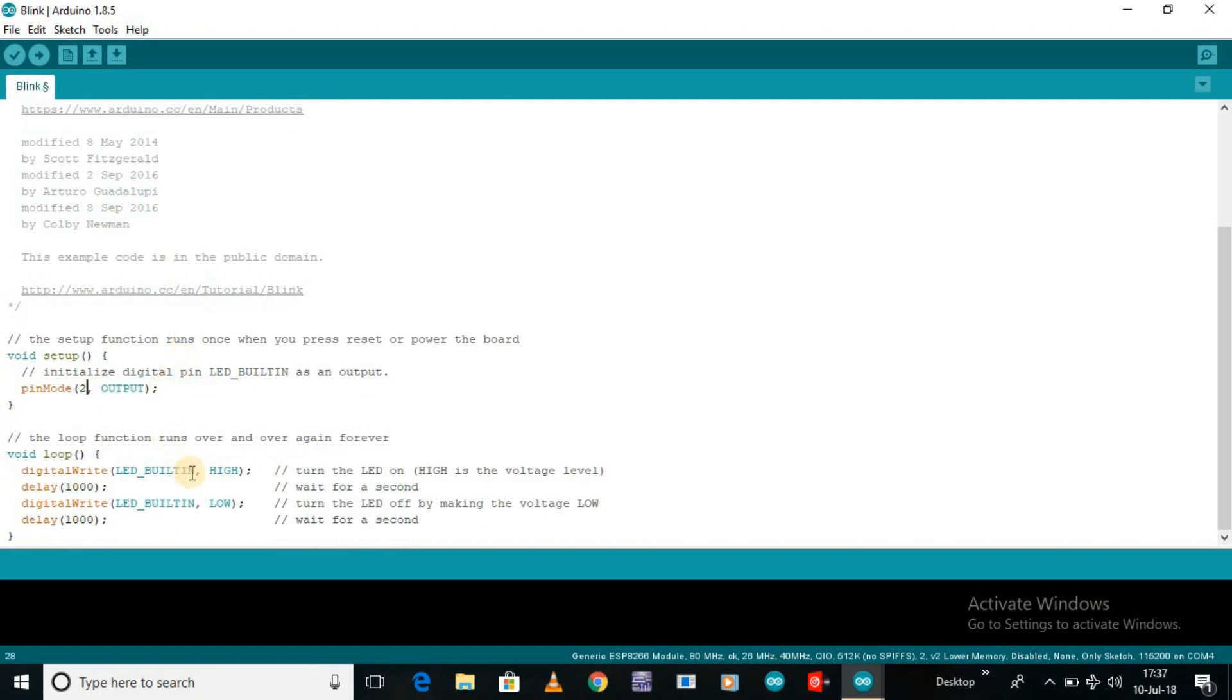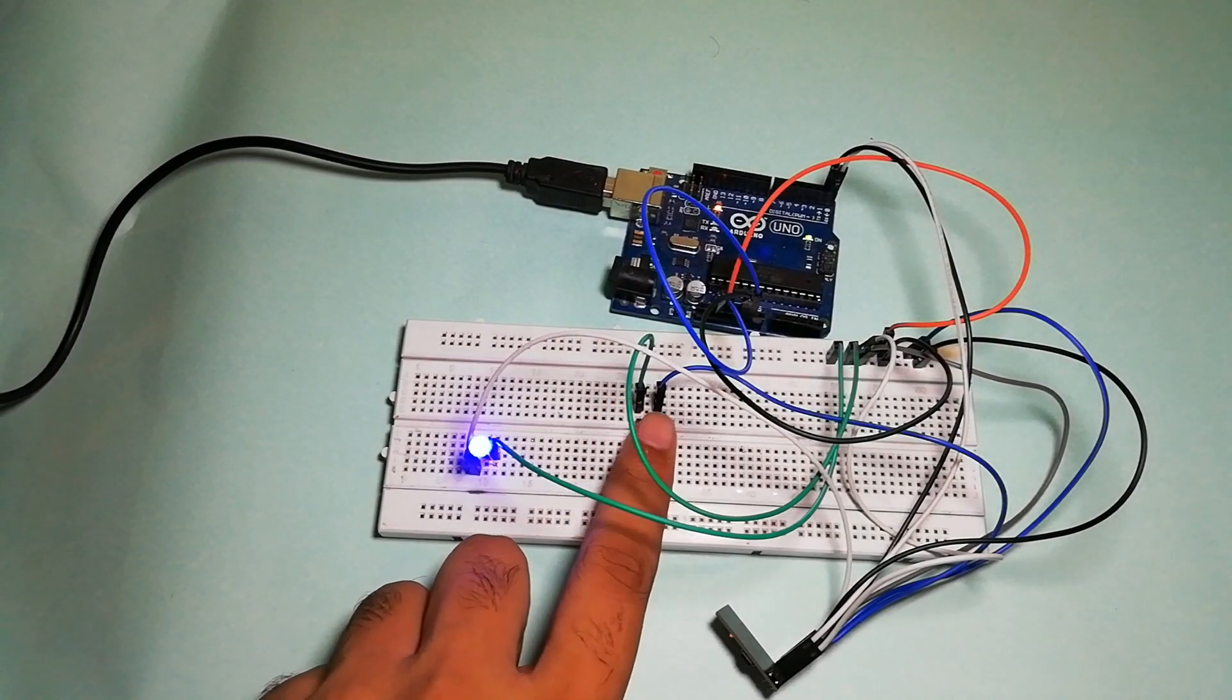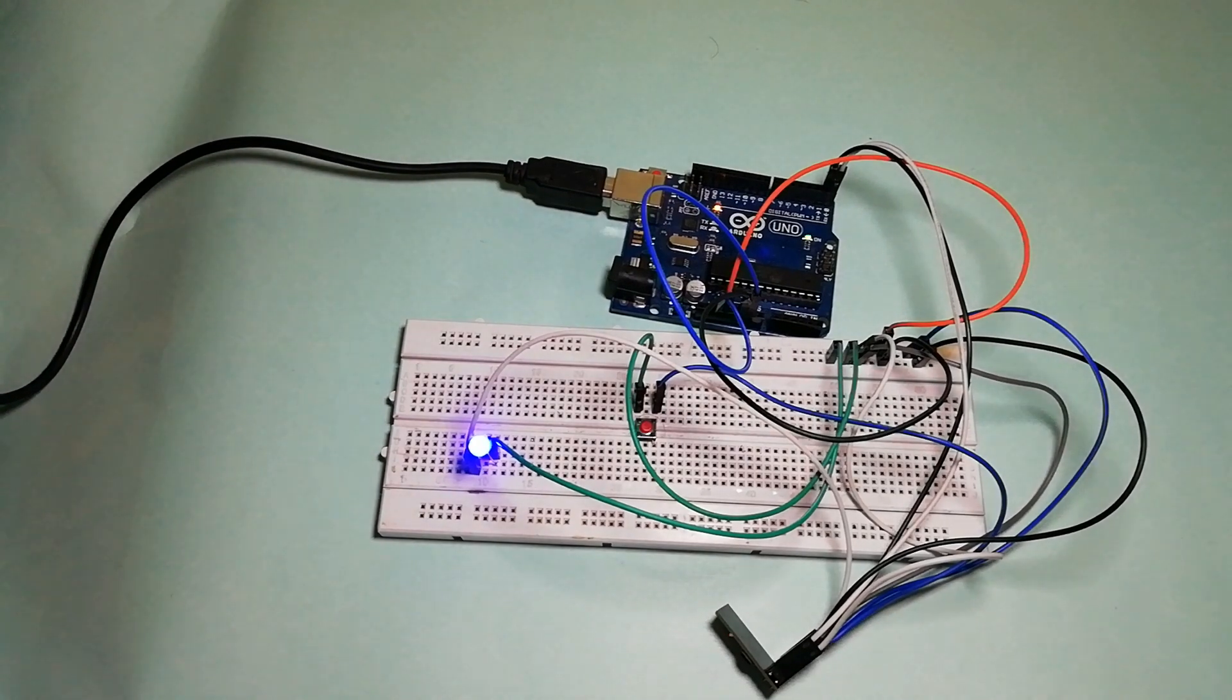And change the LED pin to 2. Here 2 means GPIO 2 pin of the ESP8266 module. Before we hit the upload, make sure that GPIO 0 is connected to ground.